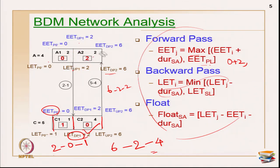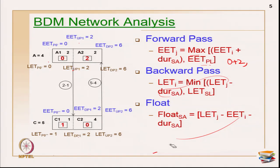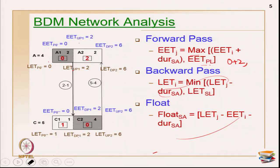So far we have seen forward pass, backward pass, and also the float calculations — we have finished the entire network analysis. As per the analysis, this particular sub-activity has 0 float, this one has a float of 2, this one has 0 float, and this one has a float of 1. The critical path here is A1 with the link and C2, because they have 0 floats on this particular network. That is how you complete the analysis. We have seen only one type of linkage — N1 to N2 — and using the three formulas for forward pass, backward pass, and float, we can also show the individual segments where the path is critical.